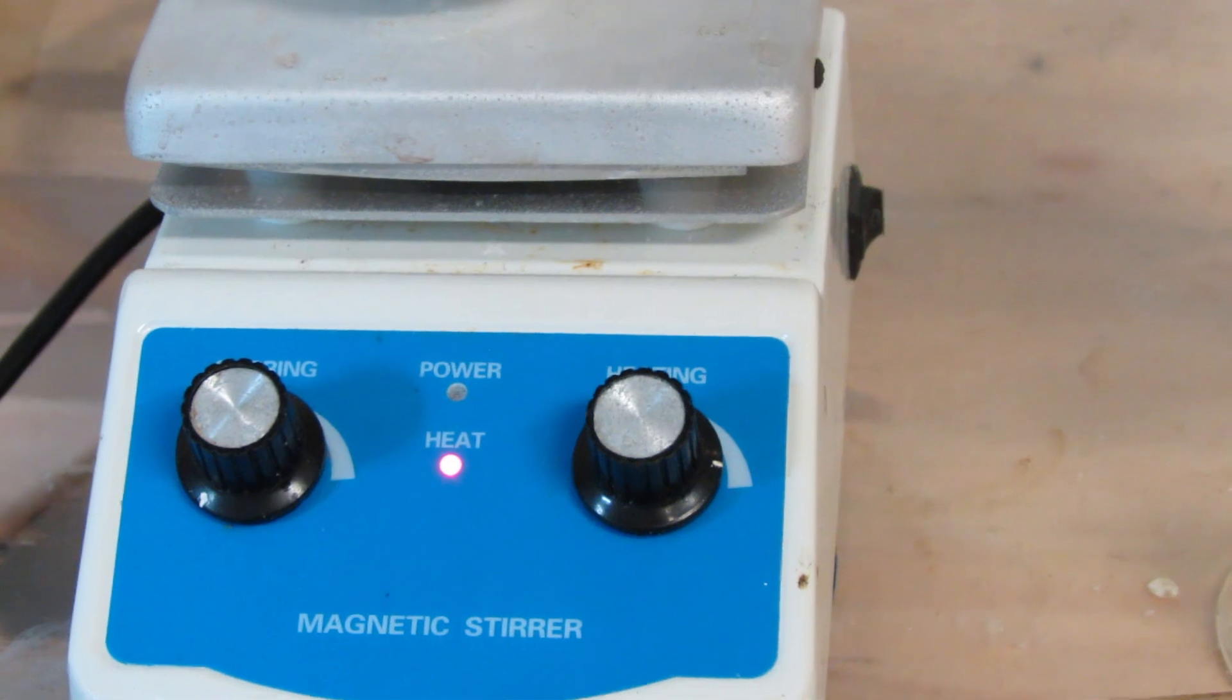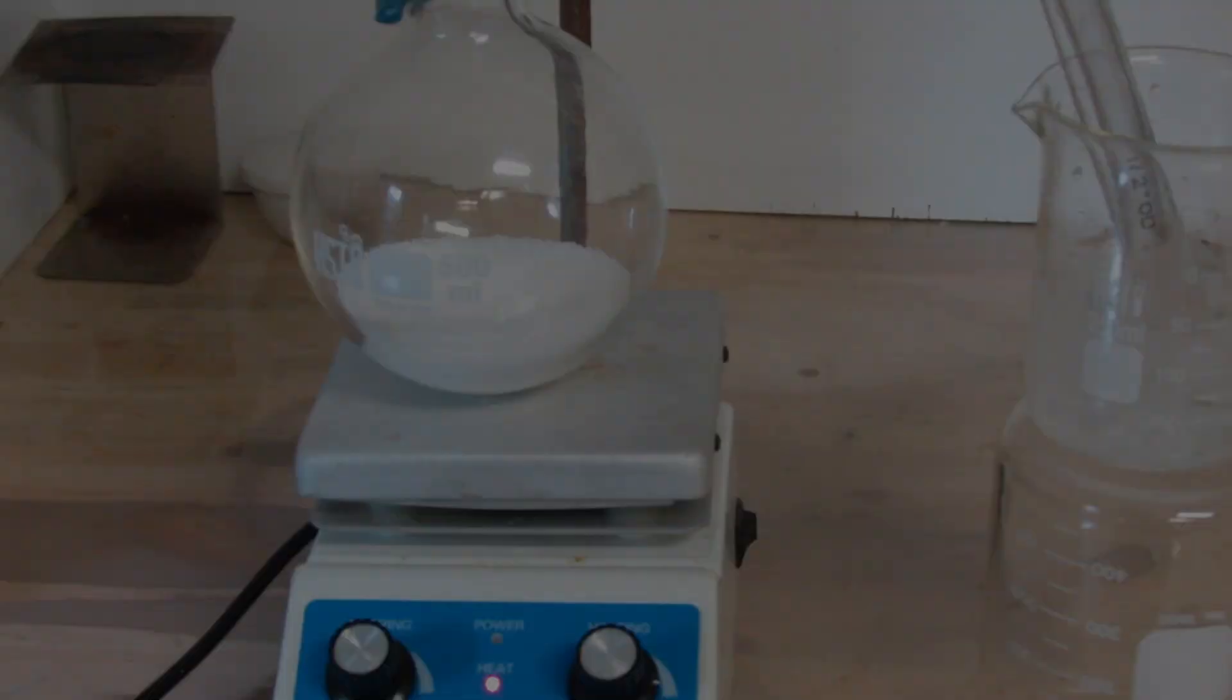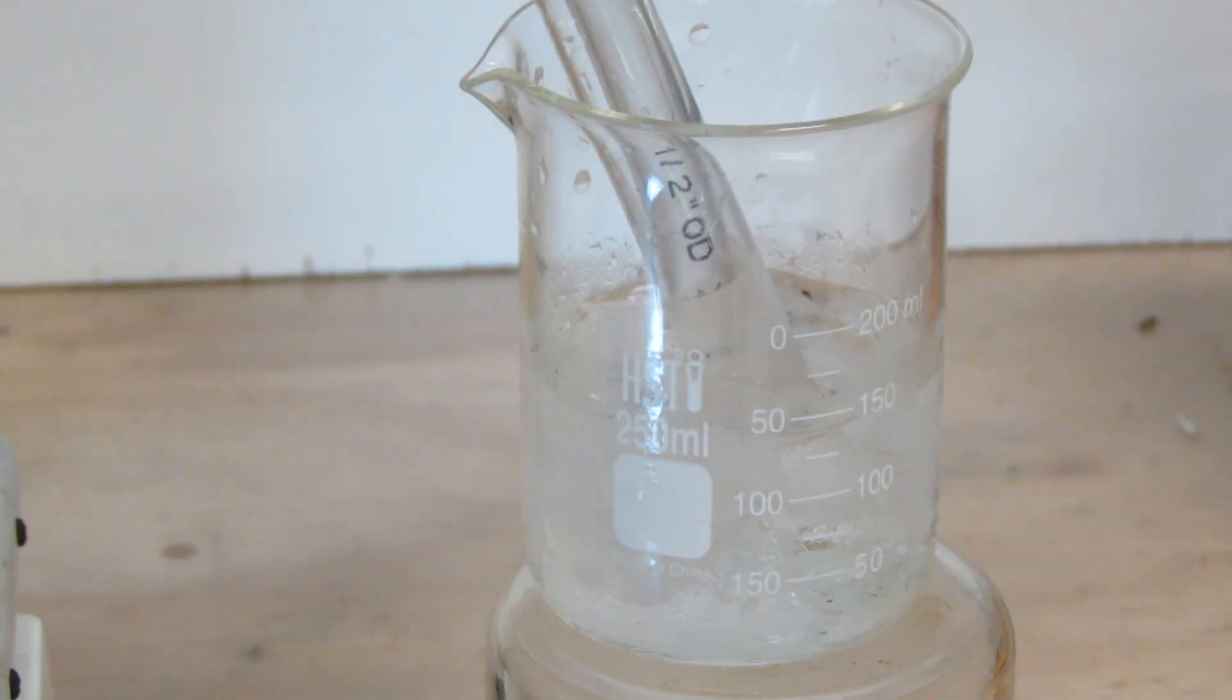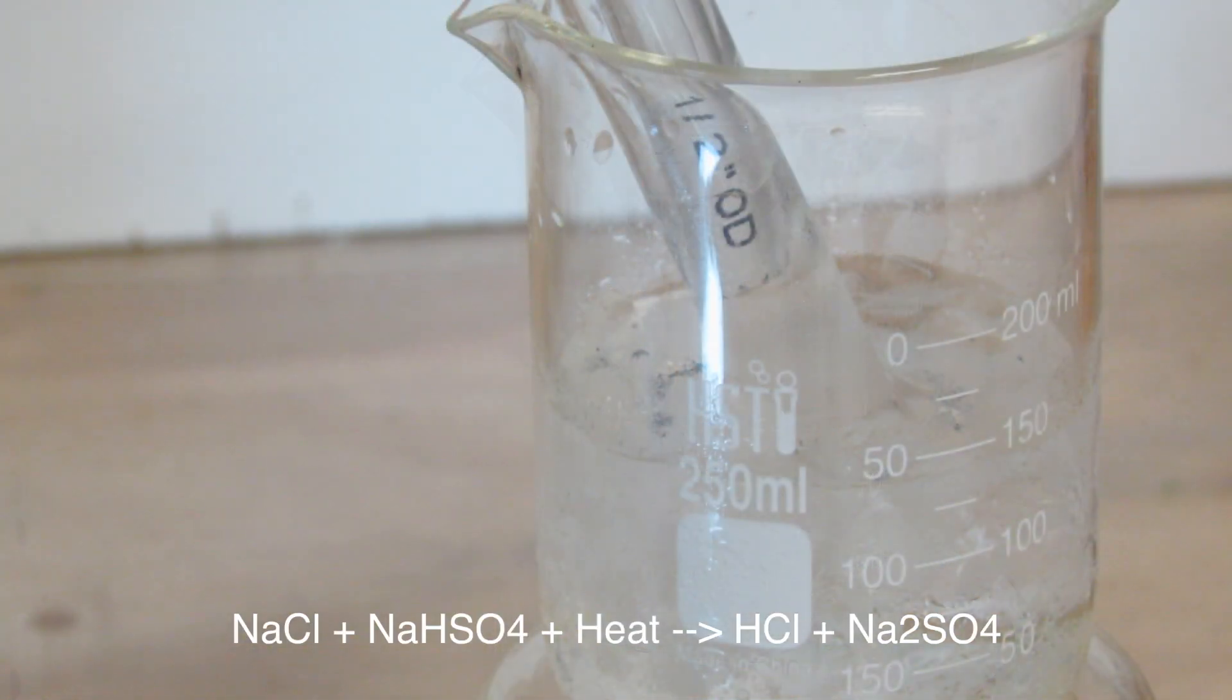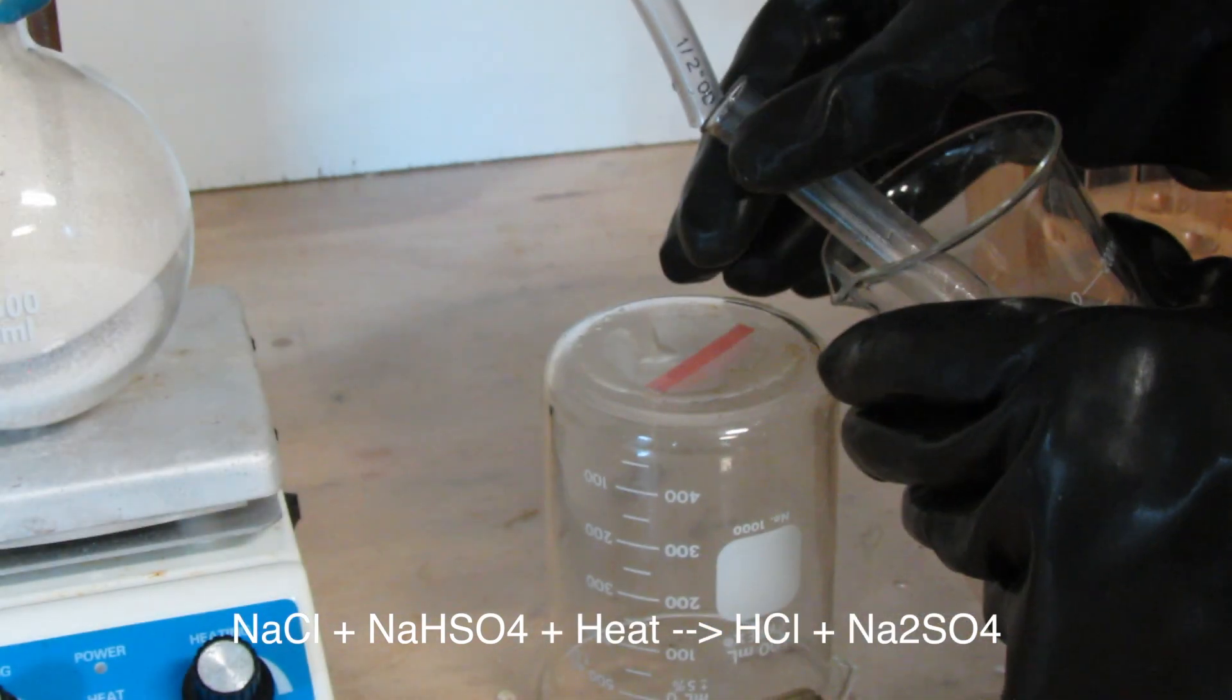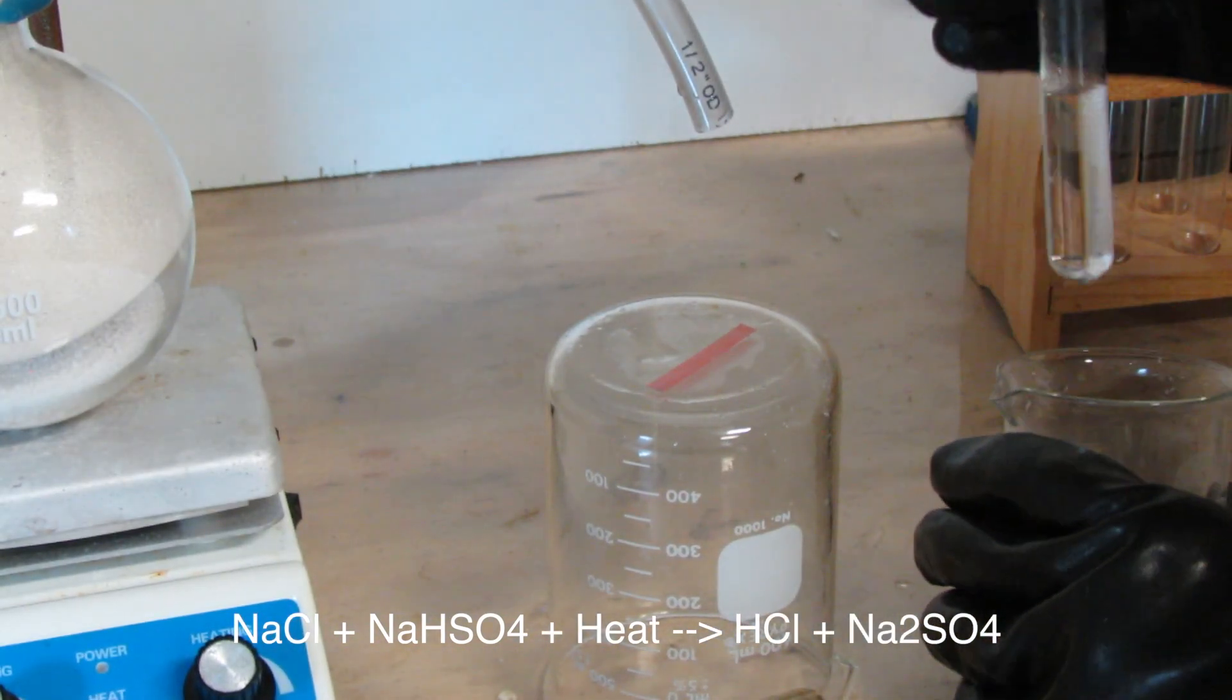When you are ready, begin heating and the hydrogen chloride will begin to be produced. At first the bubbling is very slow, but it will begin to speed up over time. You can see the bubbling rate increase significantly. When you think enough is dissolved, take it out.